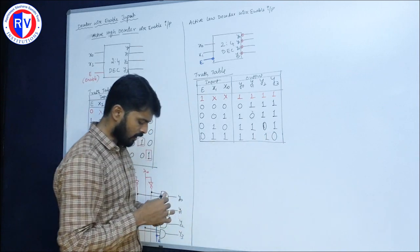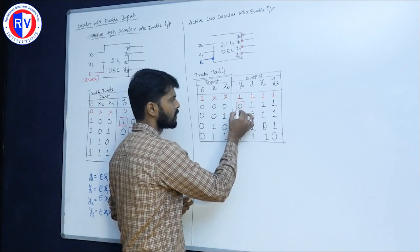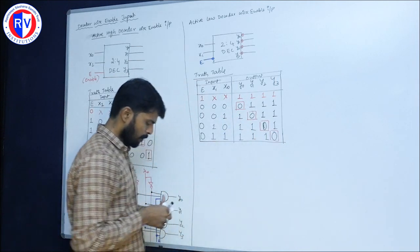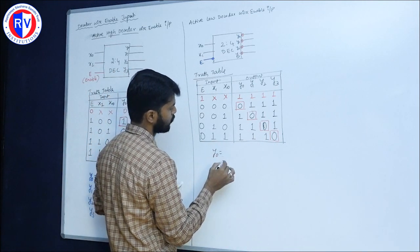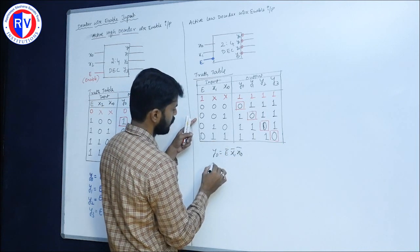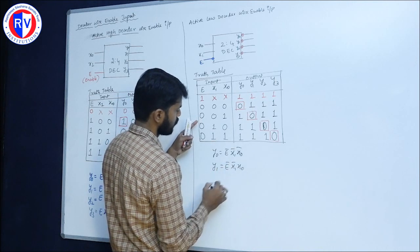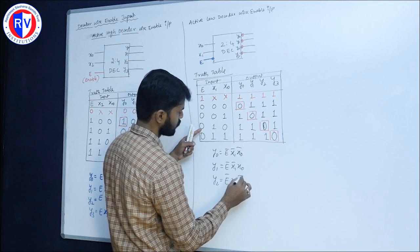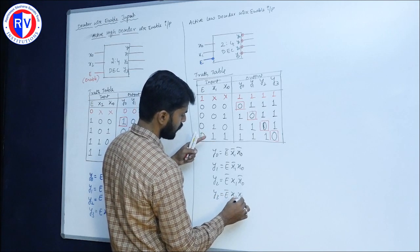In the active low decoder, we focus on the POS (product of sums) or max term — the area of interest is where the output is 0. The equations are: y0 = E_bar · x1_bar · x0_bar, y1 = E_bar · x1_bar · x0, y2 = E_bar · x1 · x0_bar, y3 = E_bar · x1 · x0.